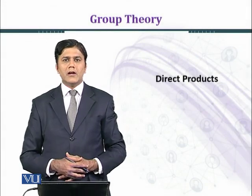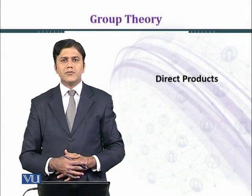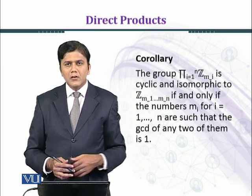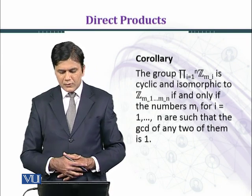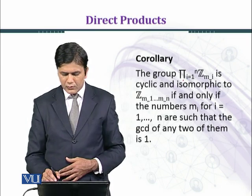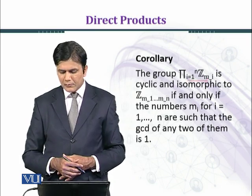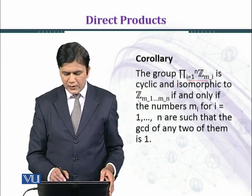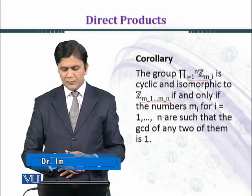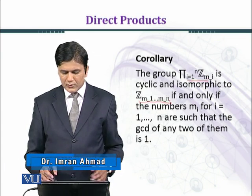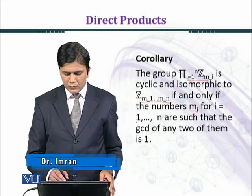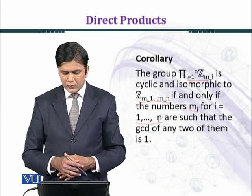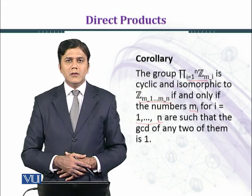In this module we shall discuss some more interesting results on direct products of groups. Let's state the corollary: the group direct product for i equal to 1 to n of Z_m_i is cyclic and isomorphic to Z_(m1 · m2 · ... · mn) if and only if the numbers m_i for i equal to 1 to n are such that the GCD of any two of them is 1.